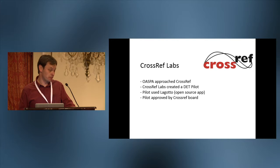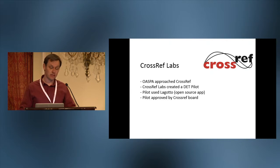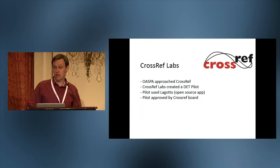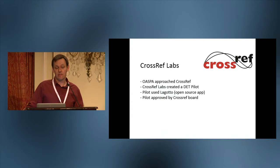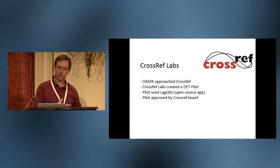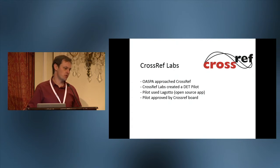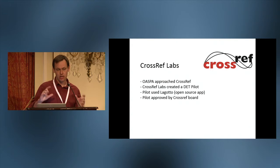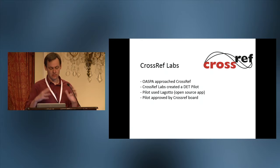About two years ago, OASPA members of CrossRef approached CrossRef and said, can you help with this problem? CrossRef Labs created a pilot, named it DET — DOI Event Tracker — and relied on an open source software package called Legato, developed out of PLOS, to look at the reach and many sources around CrossRef DOIs. That pilot included extending the software from a smaller set to the larger CrossRef set, as well as looking at ways to transfer information from referring sources to CrossRef and the changes needed in the DOI headers — just looking at different technical complexities around running a system at this scale.